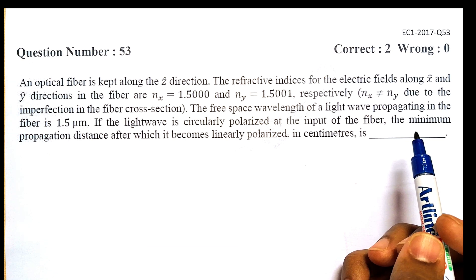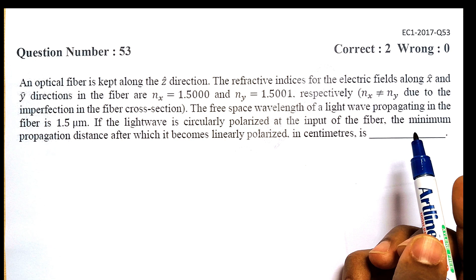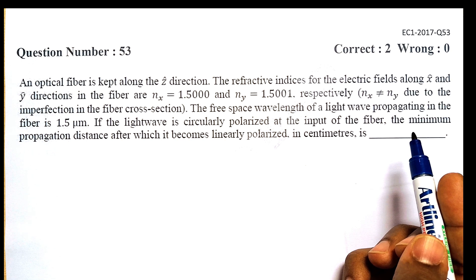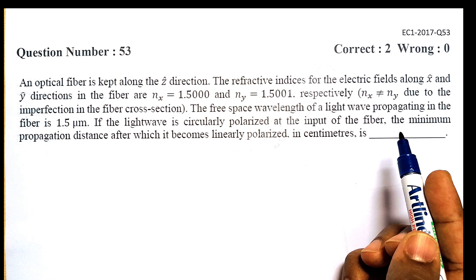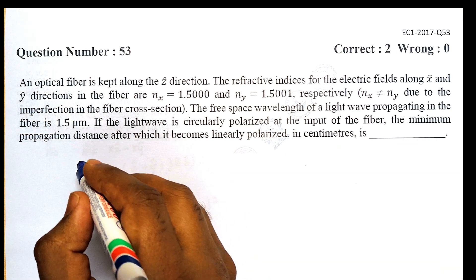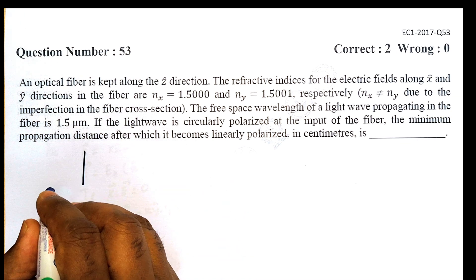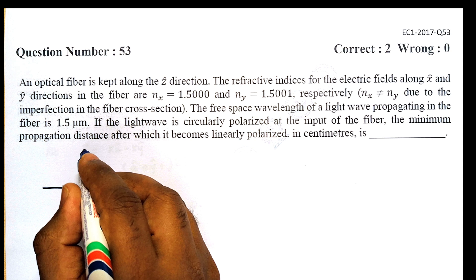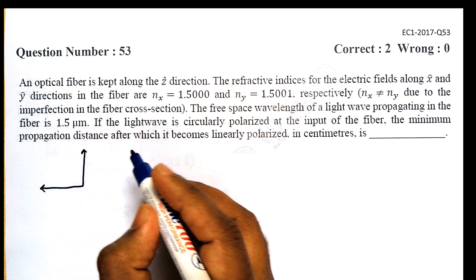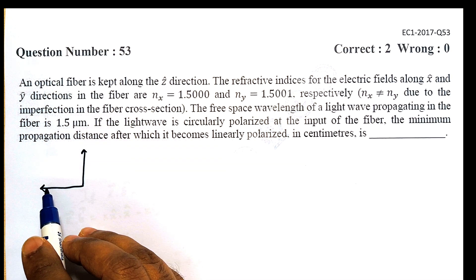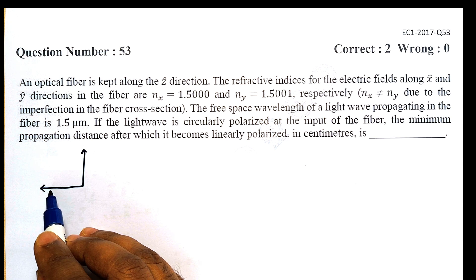This question is for two marks and it's quite an interesting question. So the wave is circularly polarized, meaning that there are two electric field components of equal magnitude and they are propagating along the Z direction.